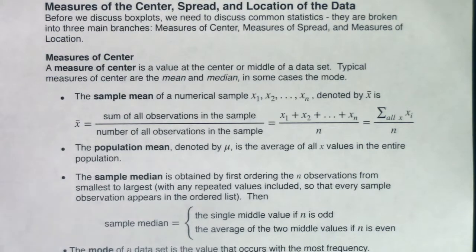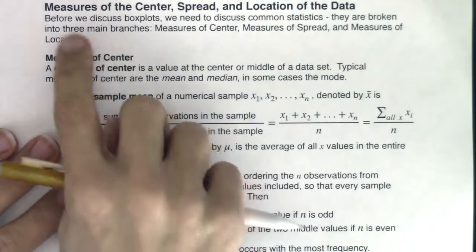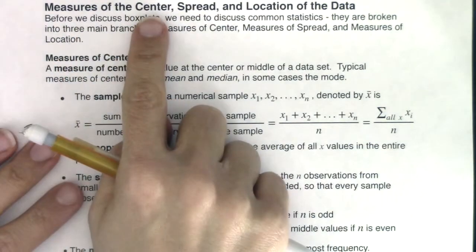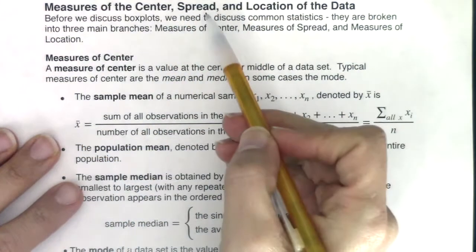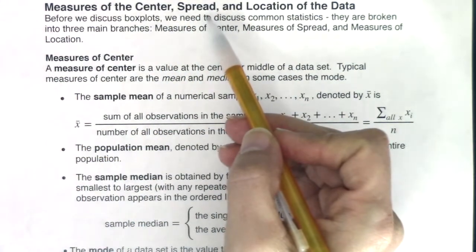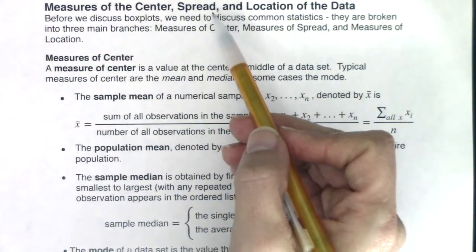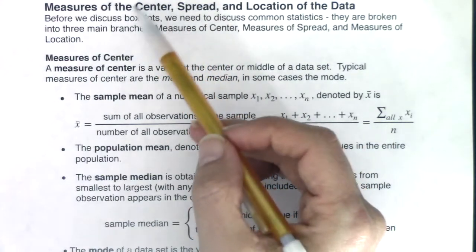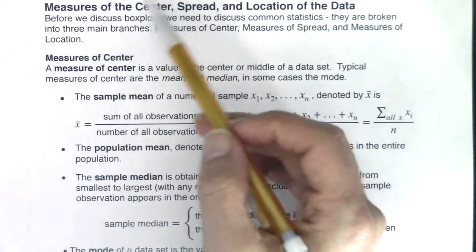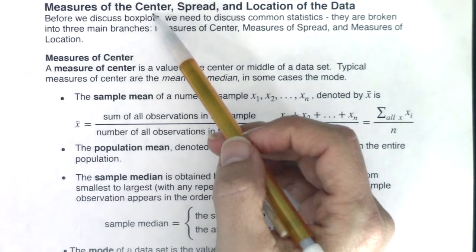Now we're going to start to pick apart the measures of center, spread, and location. We've actually already talked about two measures of spread: spread itself and range. We're going to pick up a bunch of measures of center right now. So we're officially going to pick up mean, median, and mode.